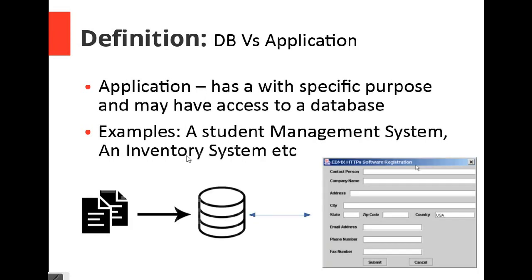Now we'll look at the differences between a database and an application. An application has a specific purpose and it may or may not have access to a database. For an application that has access to a database, the user could provide certain information — like in this example, a user can provide a contact, a company name, an address, and a city.